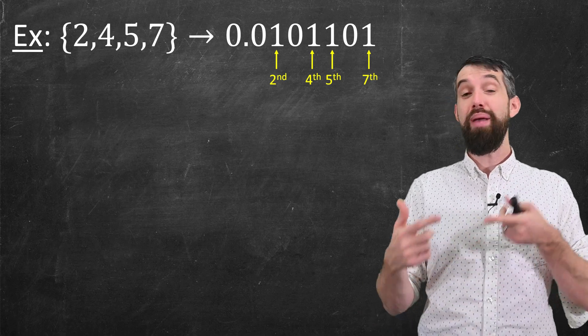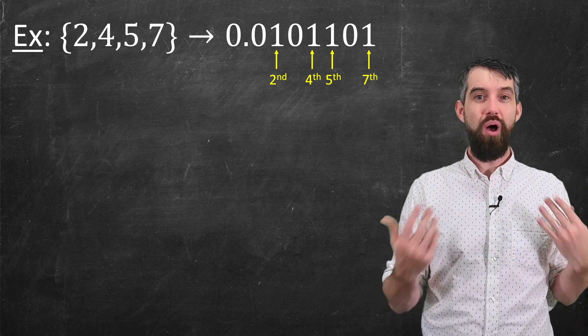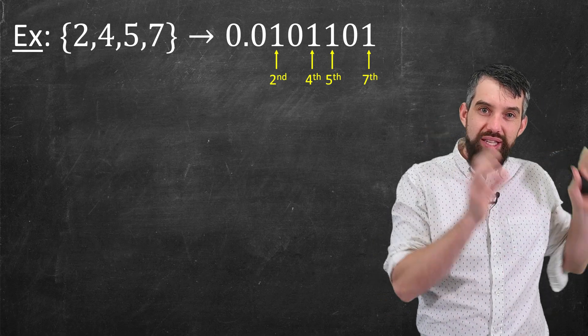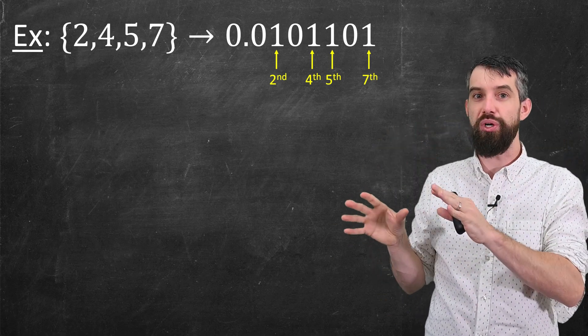and that would have come from a different subset. But all I need for my purposes right here is that there is some subset that maps to this particular number.